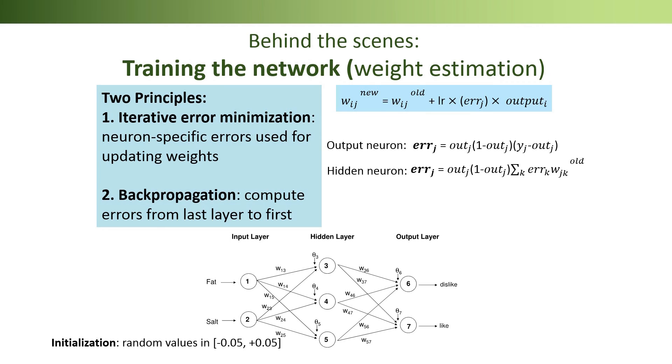The error formula is slightly different for neurons in the output and hidden layers, but these are small details. The second estimation principle is called backpropagation. The idea here is that we update the weights starting from the output layer and moving back to the hidden layers.